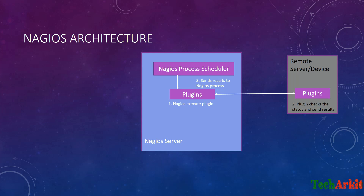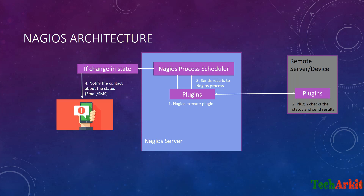The Nagios server calls those plugins to execute on the remote device, grabs the status, and the results are sent back to Nagios. The Nagios scheduler processes the data, and if there is any status change — for example, the service was OK before but is now critical or warning — it will notify the configured contact person or admin via email or SMS.